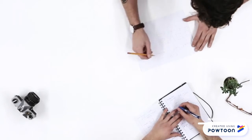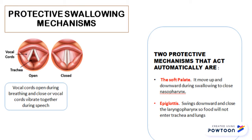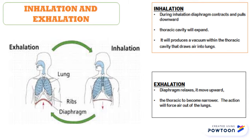The pharynx and larynx are also part of the respiratory system. During inhalation, the thoracic cavity will expand and the diaphragm will contract and pull downward. During exhalation, the diaphragm relaxes and moves upward, and the thoracic cavity becomes narrower.